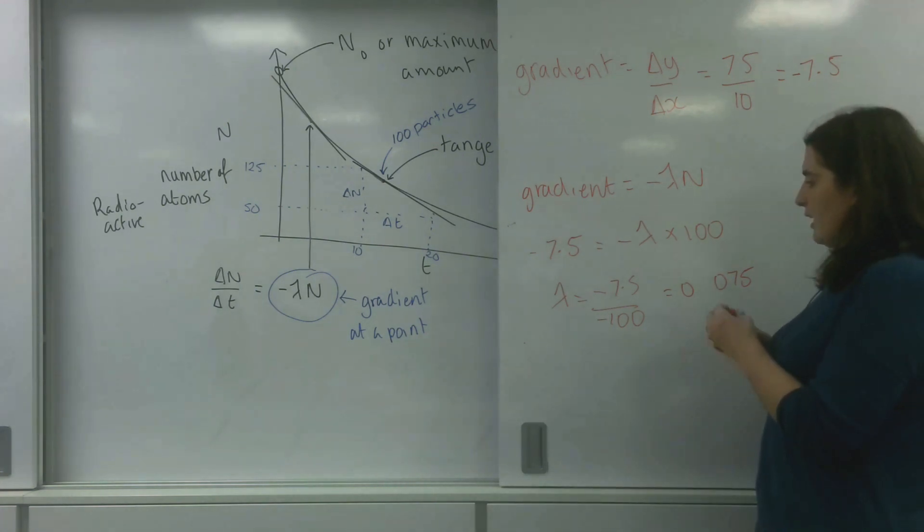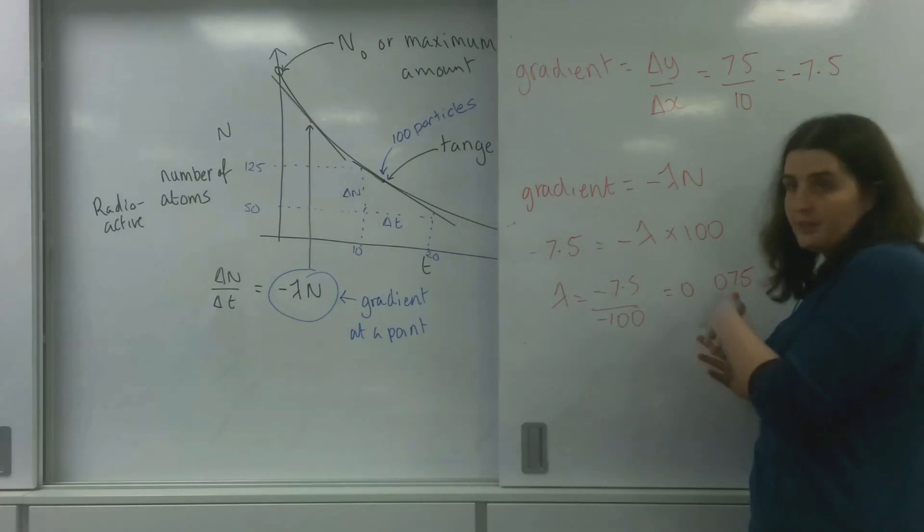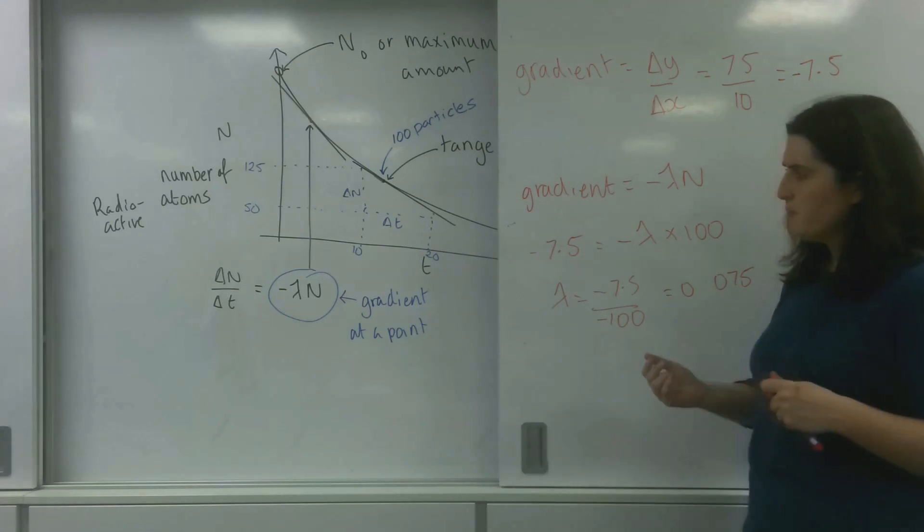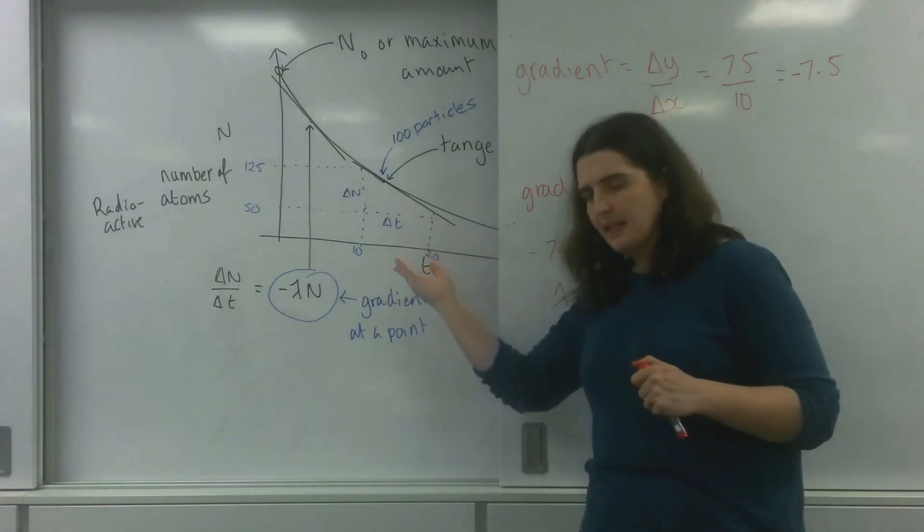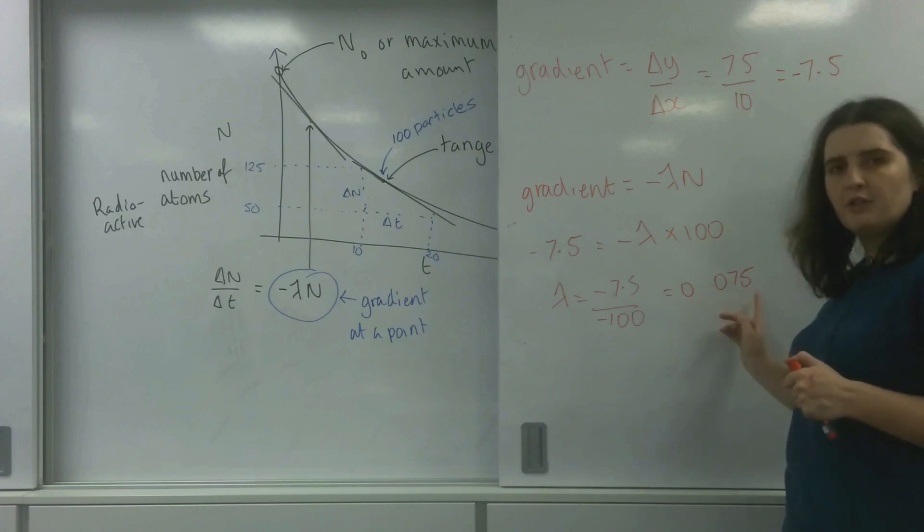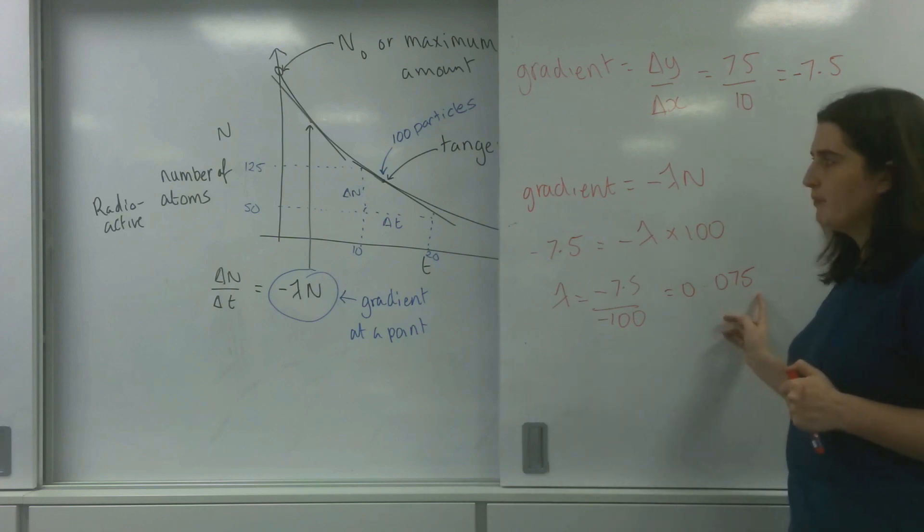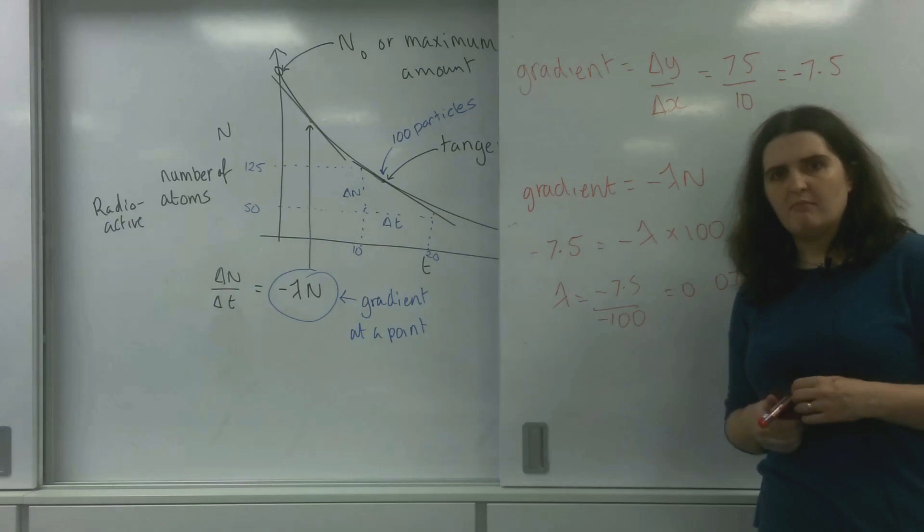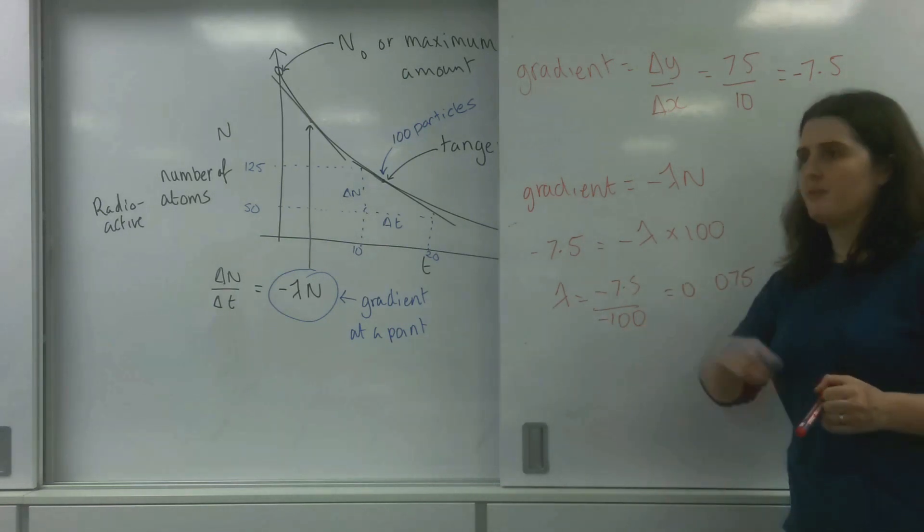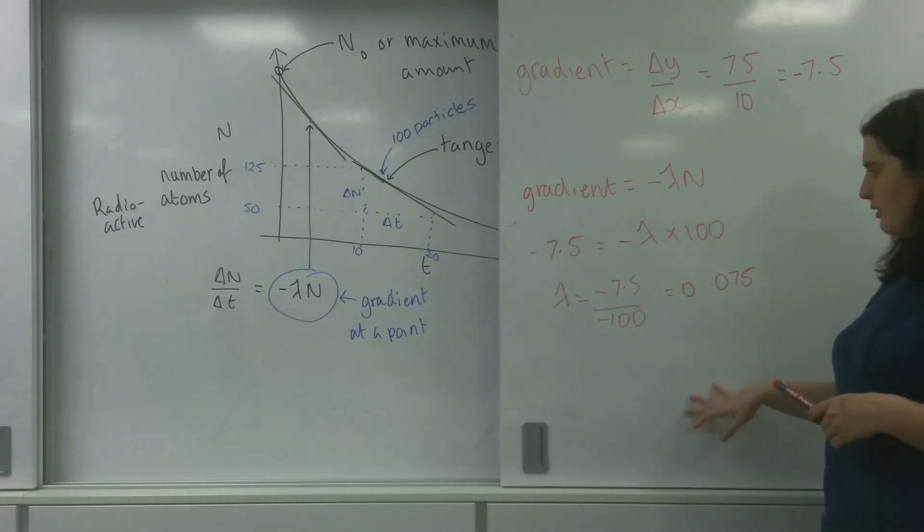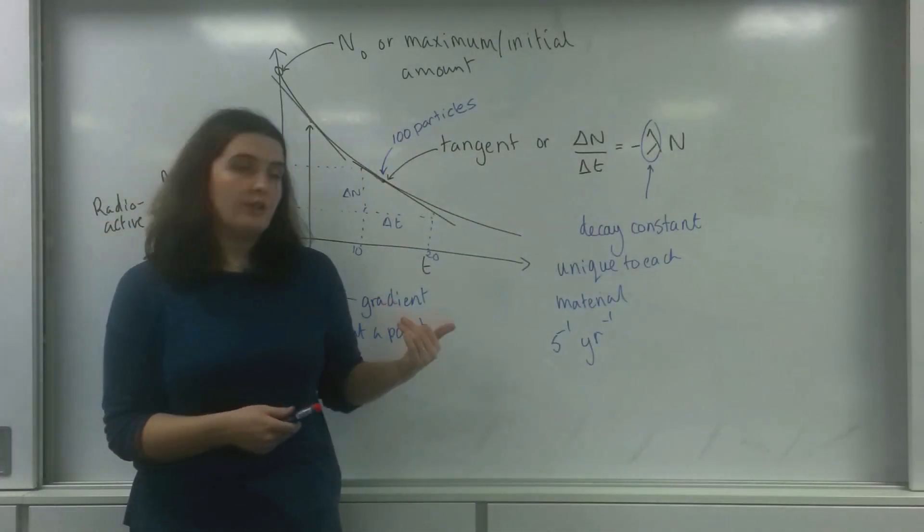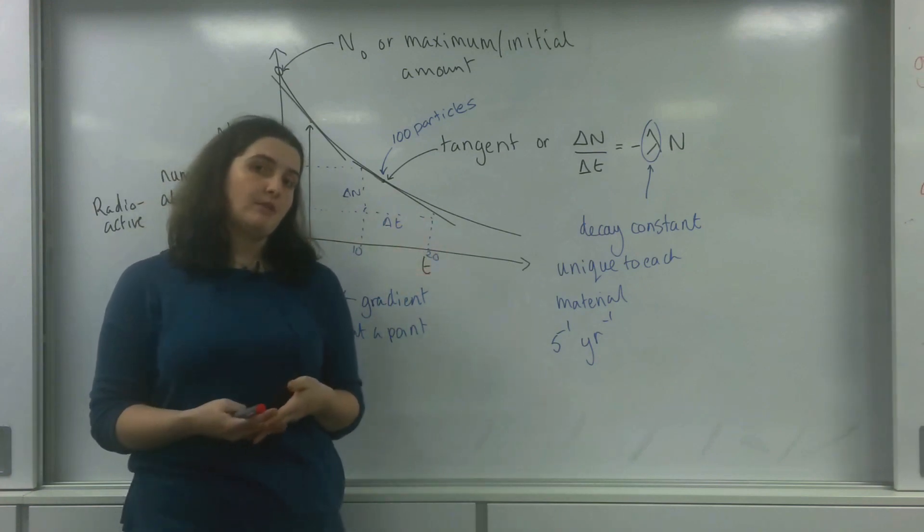So that means for my material, this material that I have invented here, every unit of time, so this might have been in days, this might have been in seconds, this is how much I'll be decaying by. So every unit of time I will lose 0.075 of it, which is approximately 7.5% every time interval. So I'll lose another 7.5%, another 7.5%. That is how you can use these graphs to get information about the material.